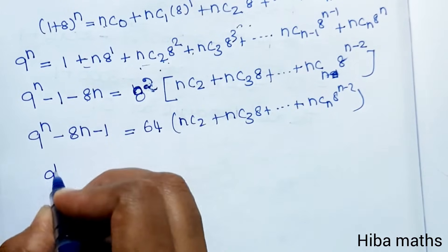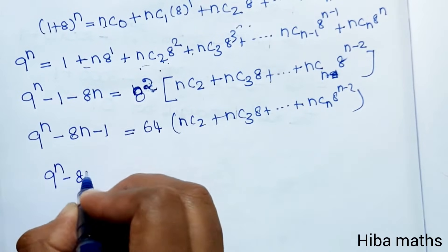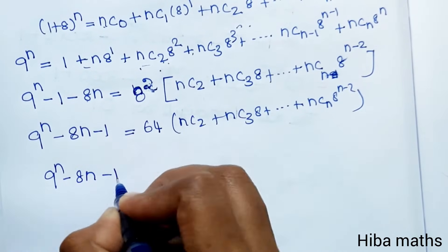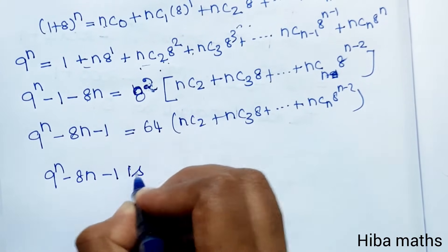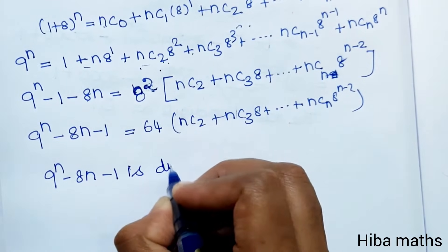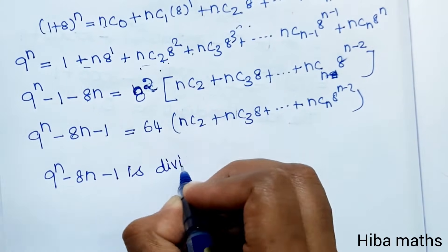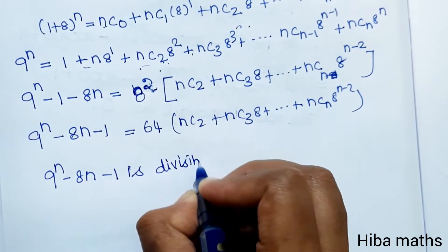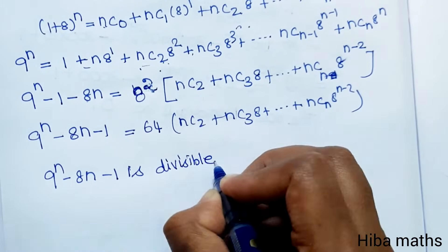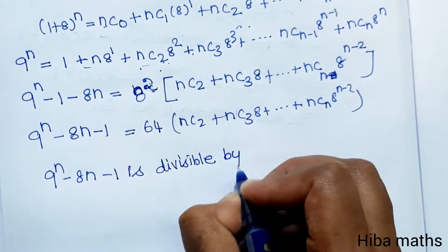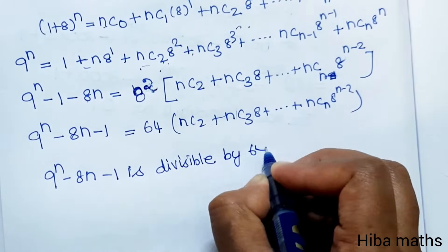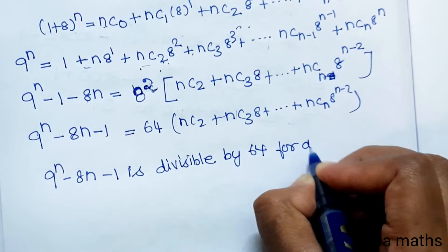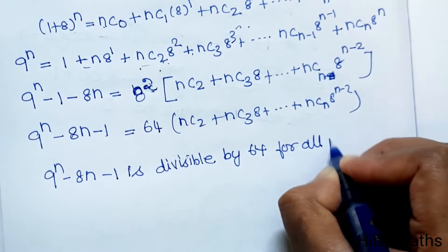Therefore, 9 power n minus 8n minus 1 is divisible by 64 for all positive integers n.